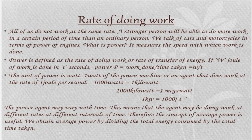If a body does W work in time t, then power is given by: Power = W / t. The unit of power is the watt. One watt is the power of a machine or agent that does work at the rate of one joule per second. 1000 watts equals one kilowatt, and 1000 kilowatts equals one megawatt.